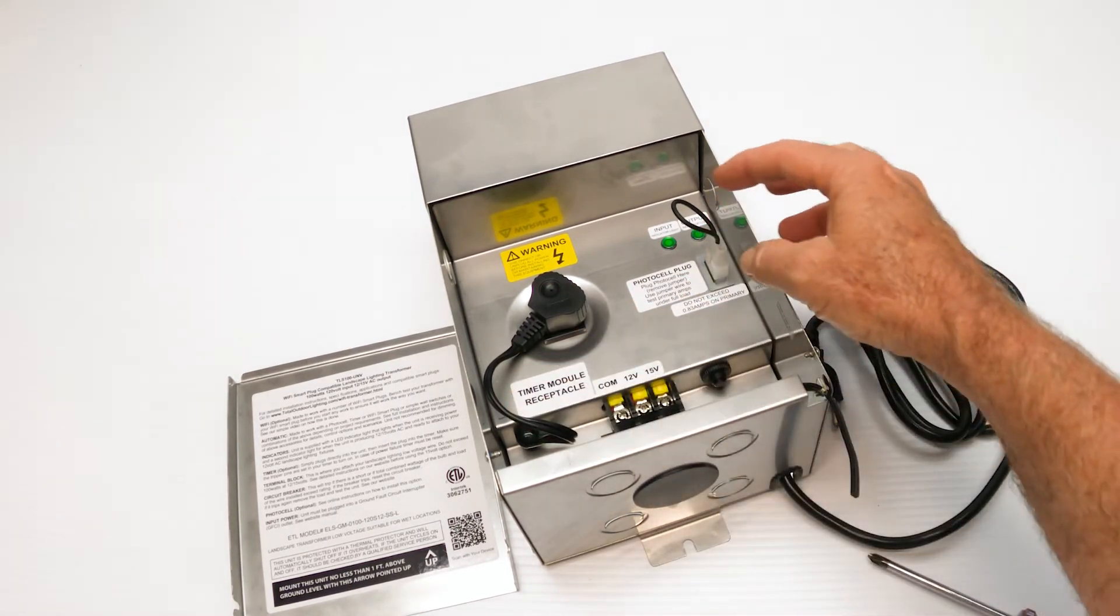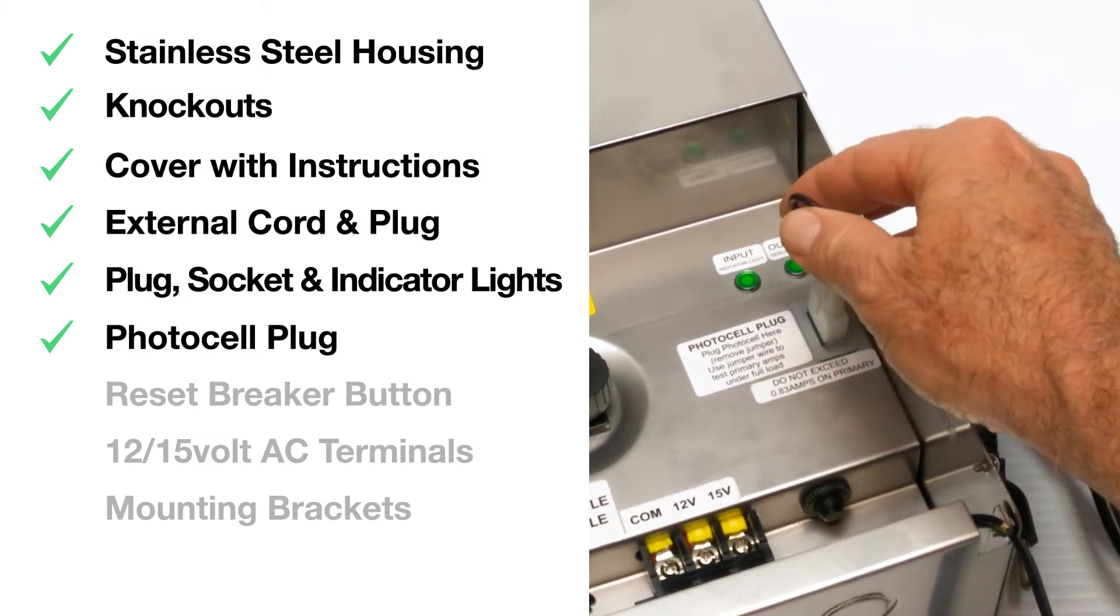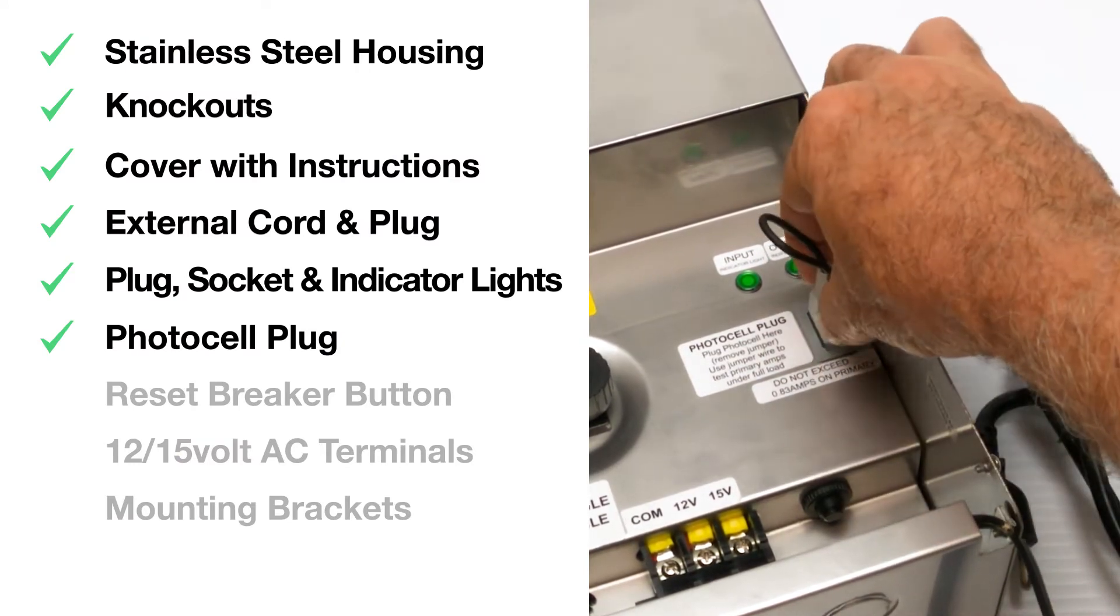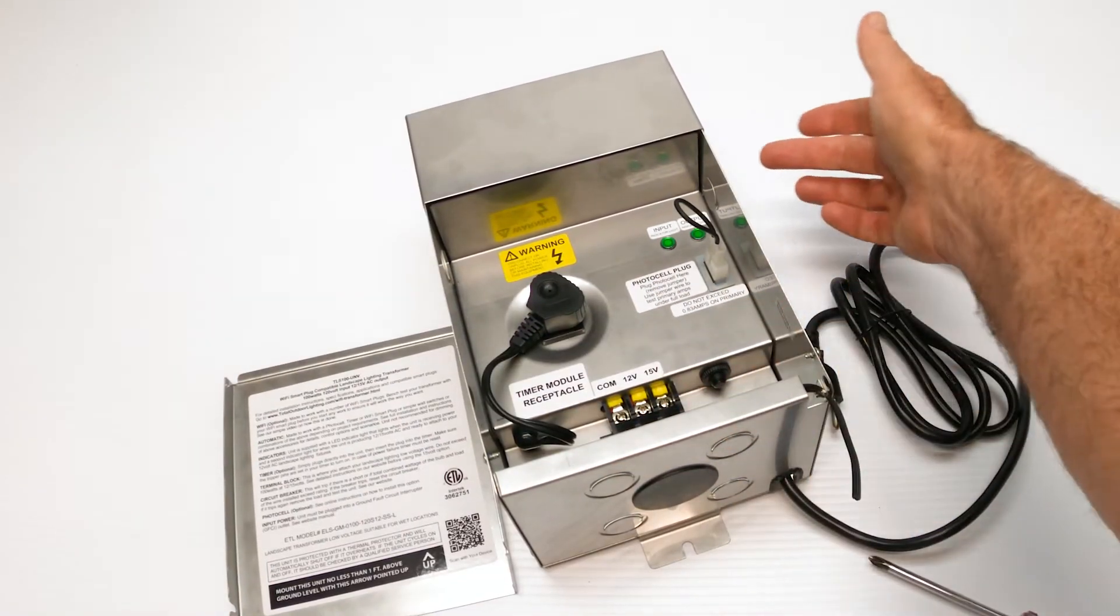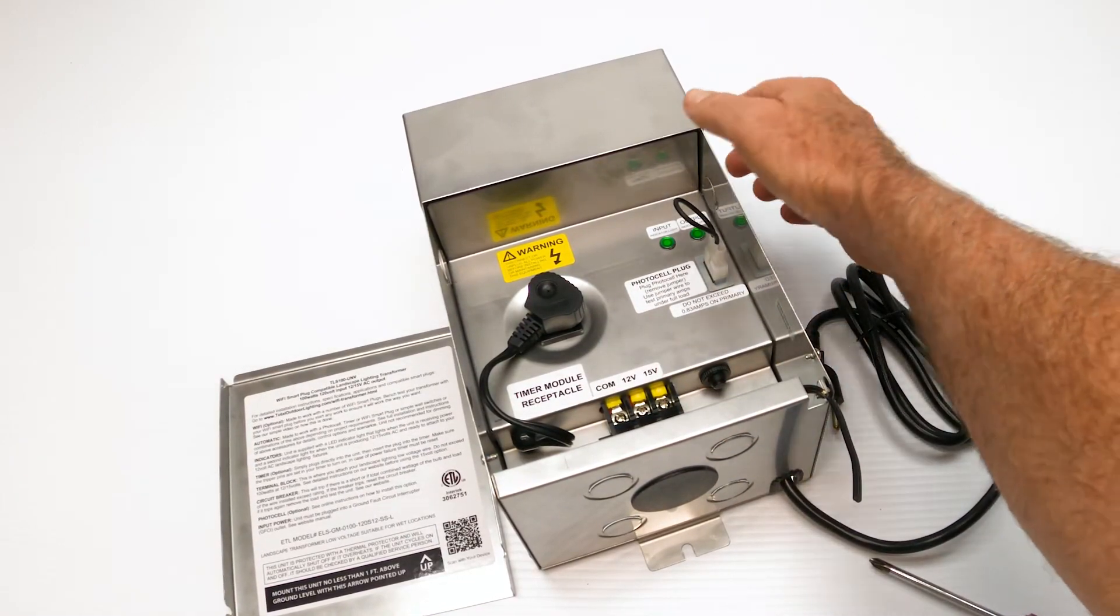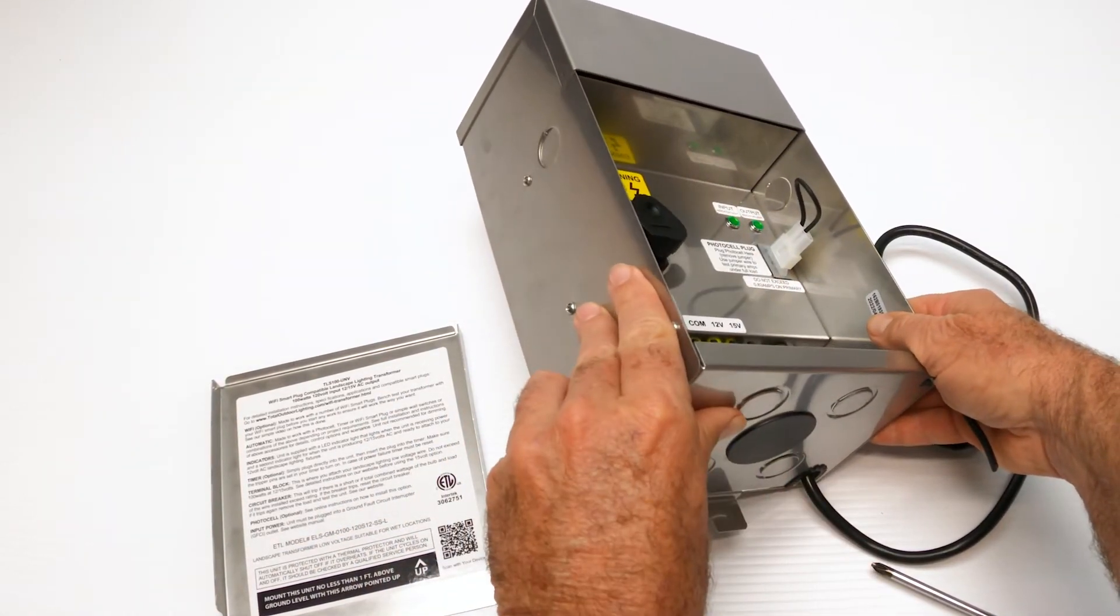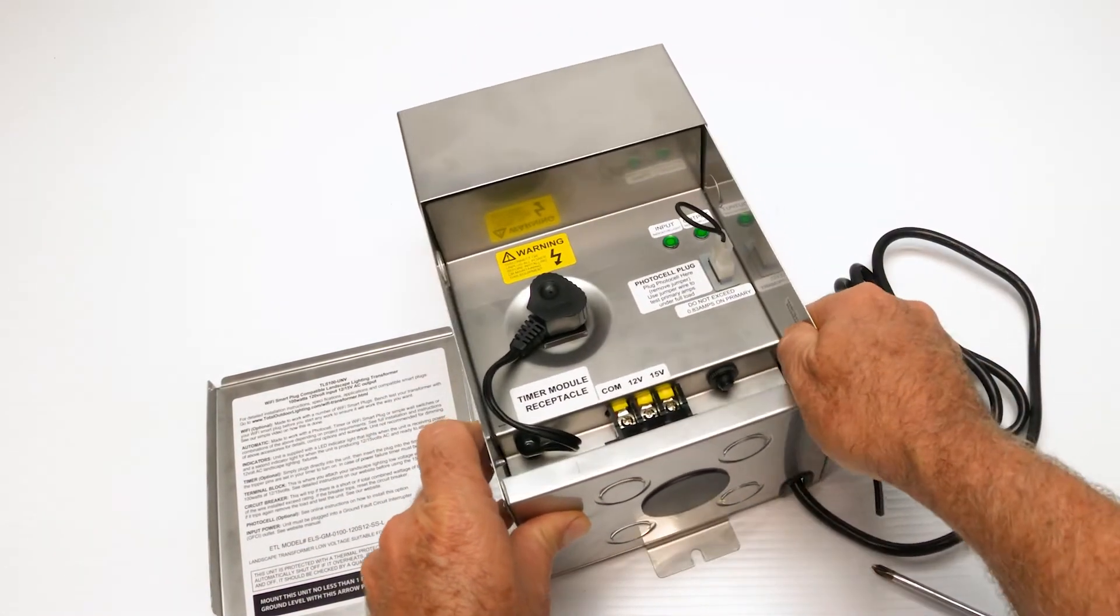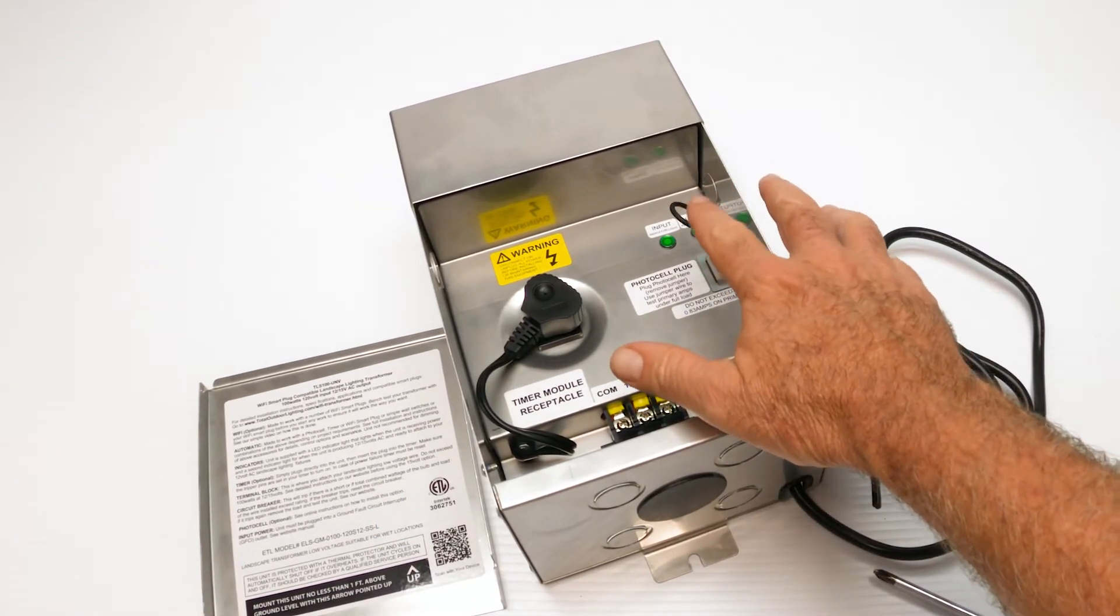Also inside the housing is a photo cell plug. And this little device unplugs. It's a jumper. It needs to be in place when you're running this without a photo cell. And the photo cell would attach here on the right side to the knockout. There's the knockout down there. And it'll plug into this position. It's already pre-wired to do that.